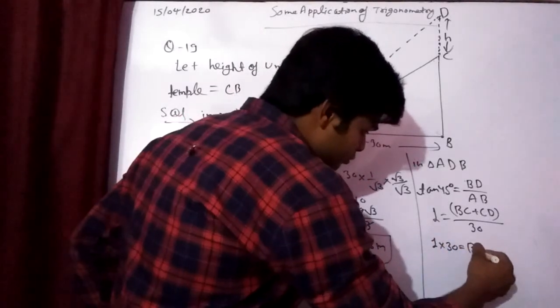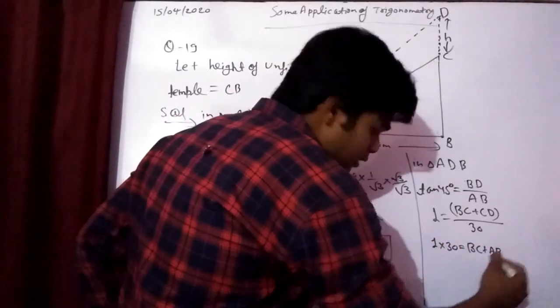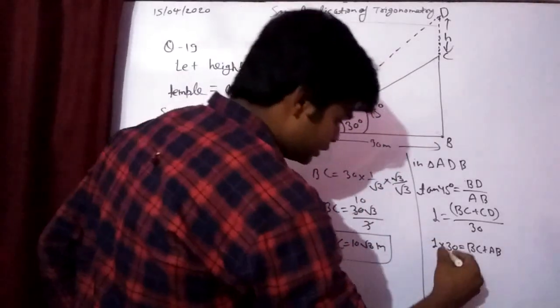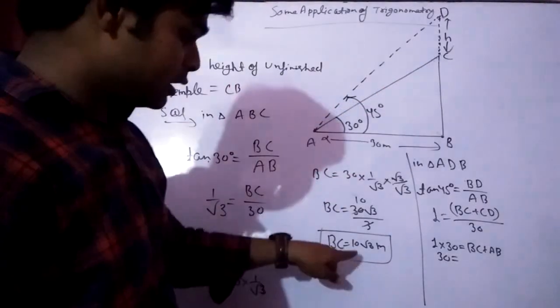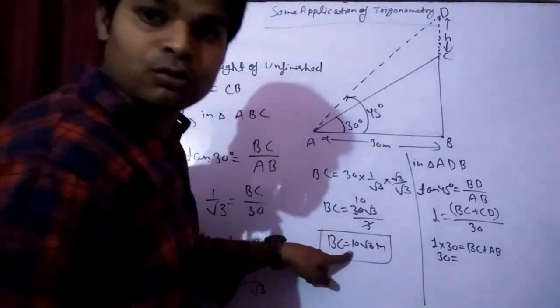Since tan 45 equals 1, we get 30 equals BC plus CD. Now 30 equals BD, and what is the value of BC? The calculated value of BC is 10 root 3 meters.